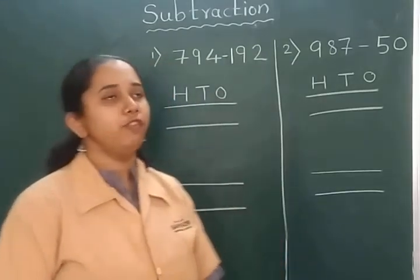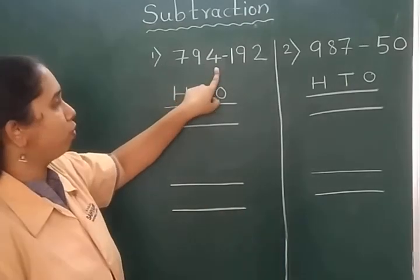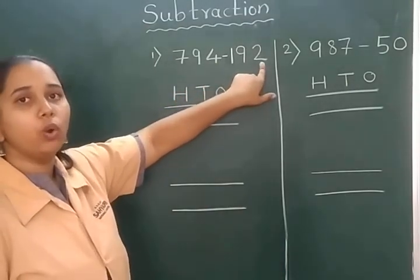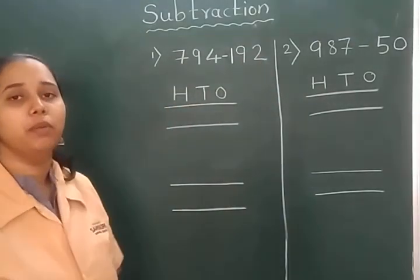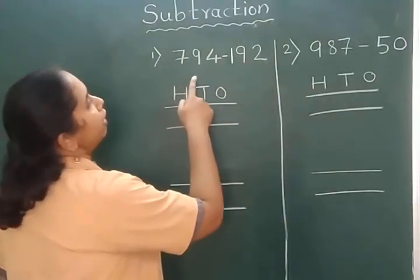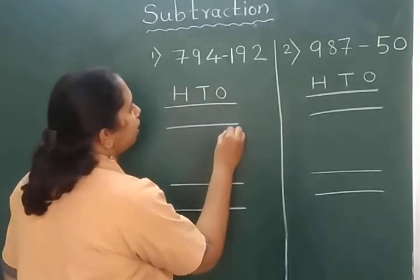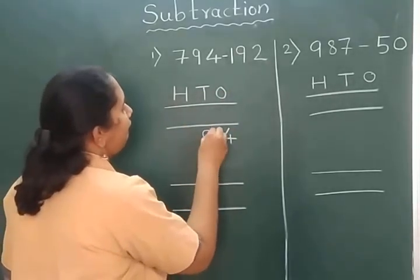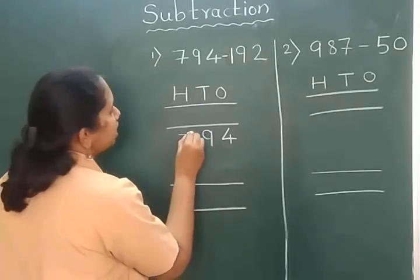Children, let's see the first example of subtraction: 794 minus 192. Now I will write these numbers as per the places. In the first number, 4 is present at one's place, 9 is present at ten's place, and 7 is present at hundred's place.